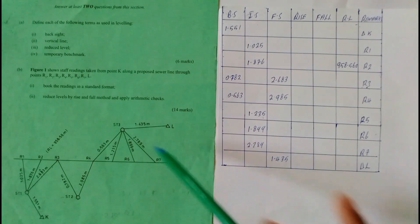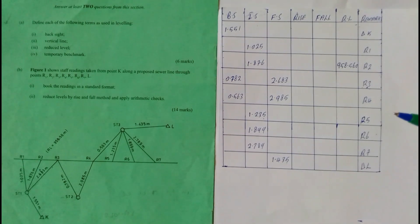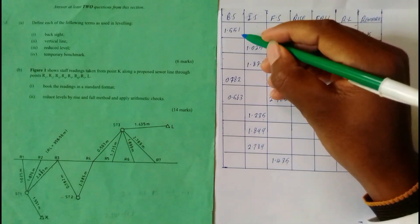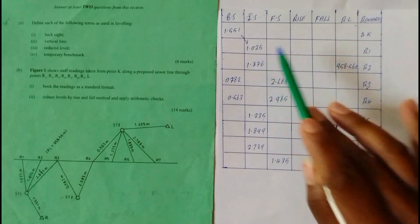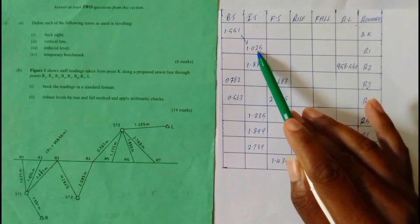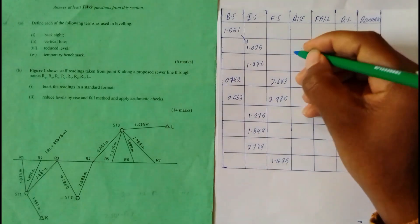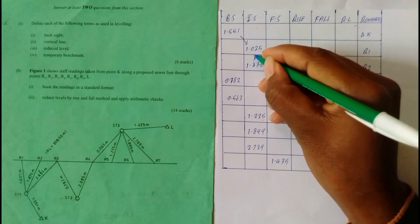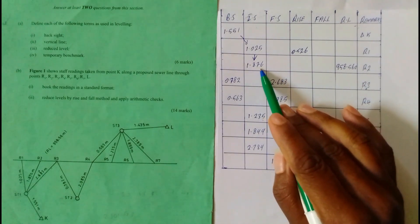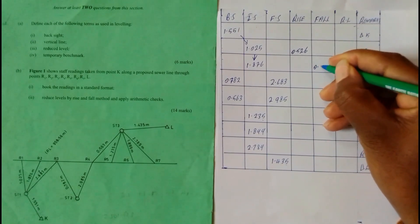With all this data we can now compute and perform the arithmetic check. We start by reducing the levels, subtracting the backsite against the intermediate site. 1.551 minus 1.025 gives a positive 0.526, so it is a rise. Then 1.025 minus 1.876 gives a negative 0.851, so it is a fall.